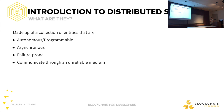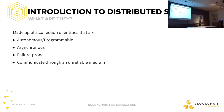More formally, we say that distributed systems are a collection of entities — this can be computers or other actors — that are autonomous or programmable, asynchronous, failure-prone, and communicate through an unreliable medium. This should already get your brains going as to what this means in relation to a blockchain, because in a sense blockchain is also a distributed system.